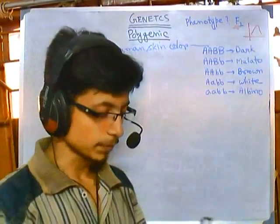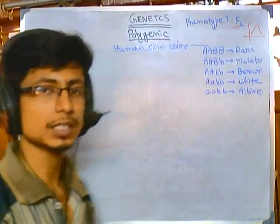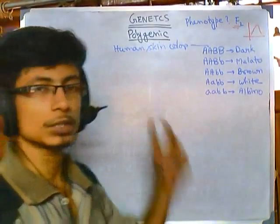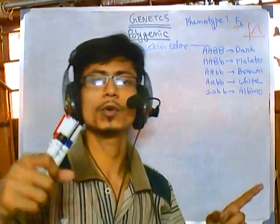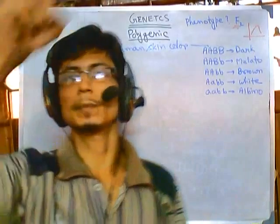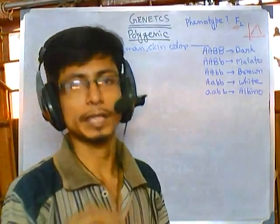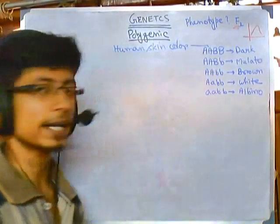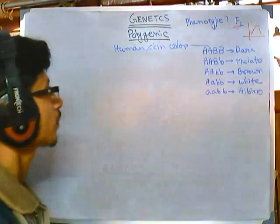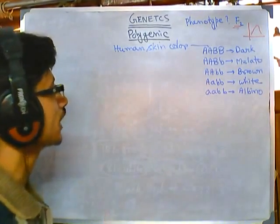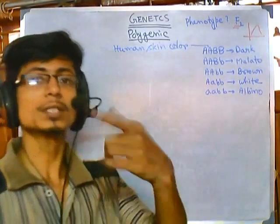The ratio you are going to get after selfing the F1 generation will look like 1:4:6:4:1, giving a bell-shaped curve. If you get this kind of ratio, you will be sure that you have done the problem correctly. So it is somewhat risk-free to solve this kind of problem, but you still need to understand the concept.